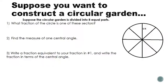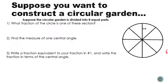On the next few slides I'm going to build some conceptual understanding of why our formula is the way it is. Feel free to skip ahead if you just want the formula. Let's say we have a circular garden divided into eight equal parts. Each of these parts is called a sector. So what fraction of the circle is each one? There are eight equal parts, so each part is one eighth of the whole circle.